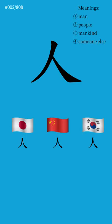In modern Chinese, Japanese and Korean, the character can mean a singular man, multiple people, all of mankind, or simply someone else.